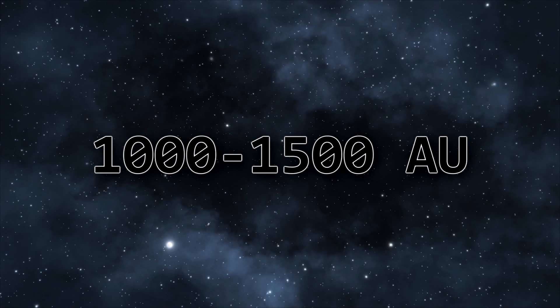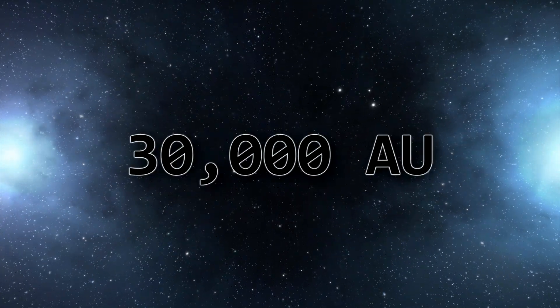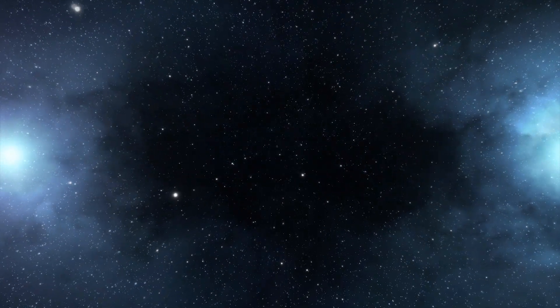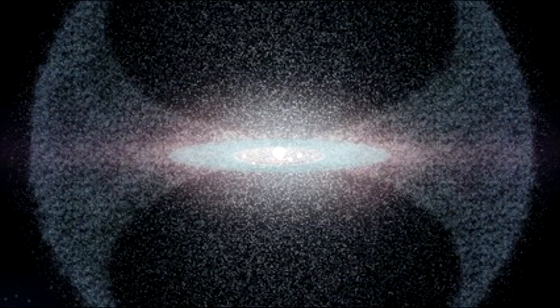If we go even further out, we can reach the Hills Cloud, a theoretical cloud of cometary objects that lies between 1,000 and 1,500 AU from the Sun and possibly extends up to 30,000 AU from the Sun, being itself part of the much larger cometary envelope, that is, the Oort Cloud.